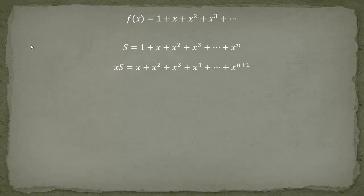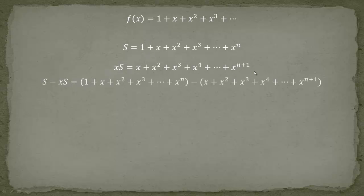Now let's look at both sums — they look quite the same. You see x here and x squared there, x squared here and x cubed there, and so forth. In front of the x to the n plus 1 is an x to the n. So if we subtract both equations we can eliminate the middle terms and we're left with 1 minus x to the n plus 1. Writing it out: S minus x times S equals the first sum subtracted by the second sum.